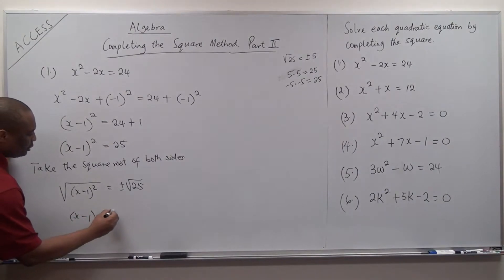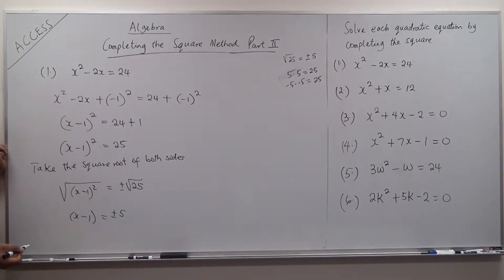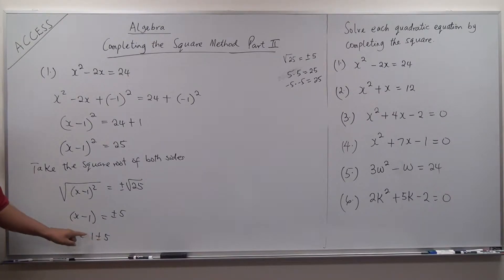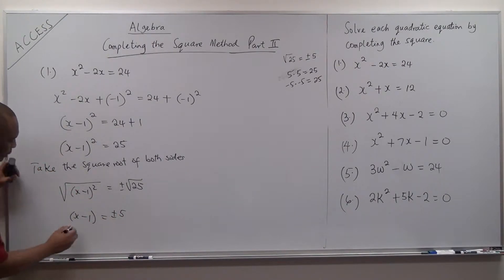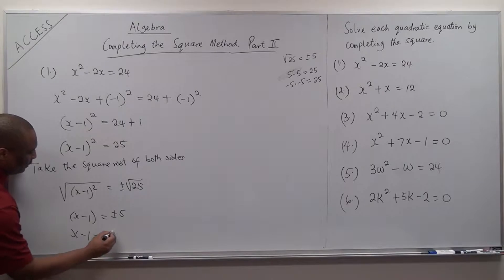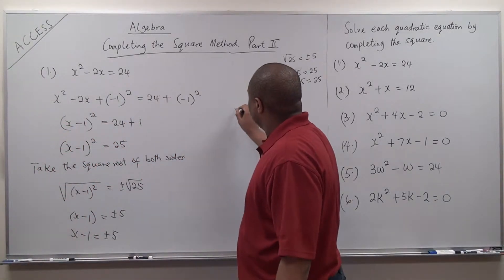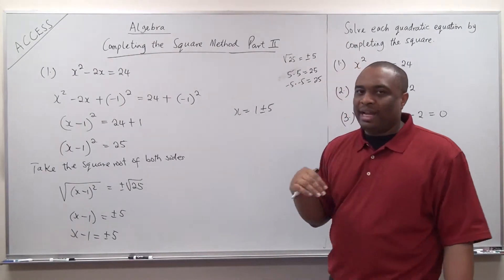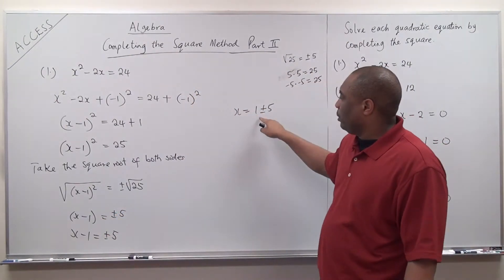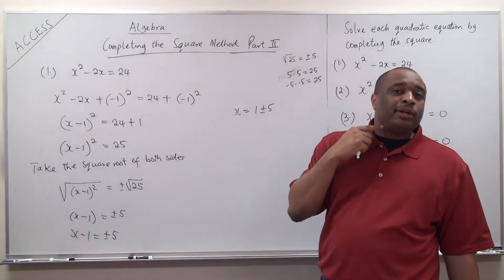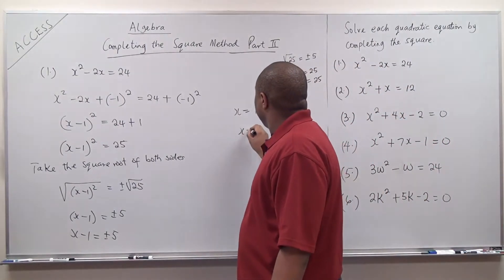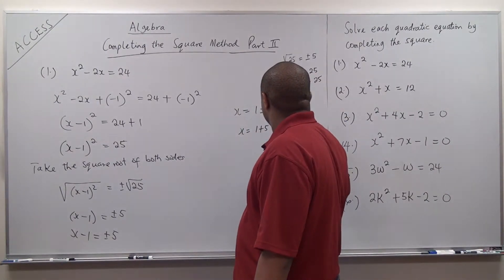So this gives you x minus 1 equal to plus or minus 5. And in this case, your x will now be 1 plus or minus 5. If you are confused, you can open up the parenthesis: x minus 1 equals plus or minus 5, and then x equals 1 plus or minus 5. When the negative 1 moves over, it becomes positive 1, and put it in front of the plus or minus 5. So x will be either 1 plus 5 or x will be 1 minus 5.